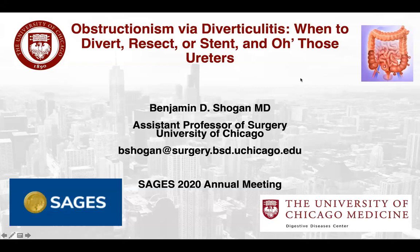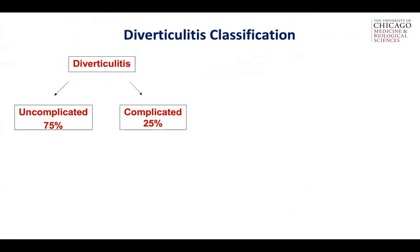My name is Ben Shogun. I'm a colorectal surgeon at the University of Chicago, and I'd like to thank the program committee for giving me the honor of presenting on diverticulitis and some of the decisions behind what surgeries should be offered. I have no disclosures.